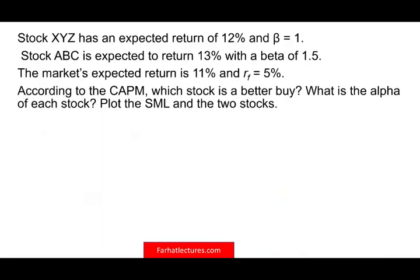Let's take a look at another example to see how this all fits together. Stock XYZ has an expected return of 12%, a beta of 1. Stock ABC is expected to earn 13% with a beta of 1.5. The market expected return is 11%, risk-free rate is 5%. According to the CAPM, which stock is a better buy? And what's the alpha for each stock? From the alpha, we're going to know which one is the better buy and plot the SML and the two stocks. First, let's compute the expected return for each stock, starting with